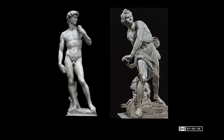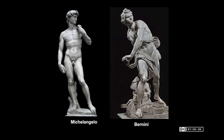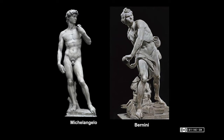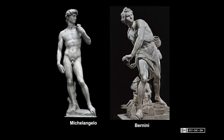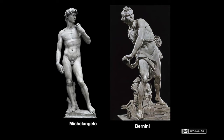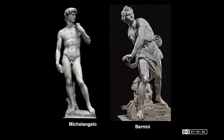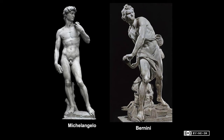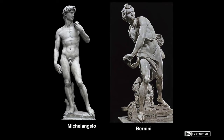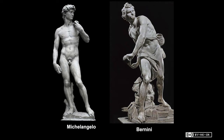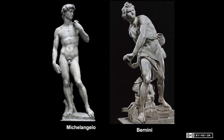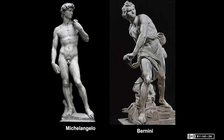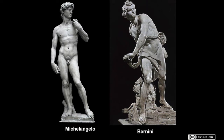If you guessed Bernini's David, then you are a winner. It seems to encompass everything just explained. Michelangelo's David sculpture is stoic and gorgeous but lacks emotion and raw detail, not to mention movement. Bernini's sculpture of David, on the other hand, is in the midst of a hard throw, his body twisting and pivoting toward an enemy we can only imagine.